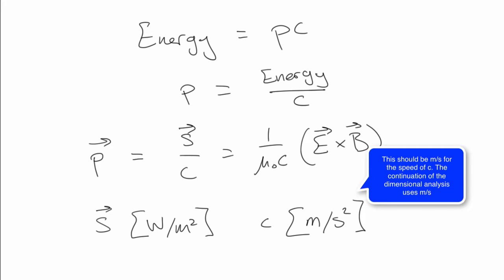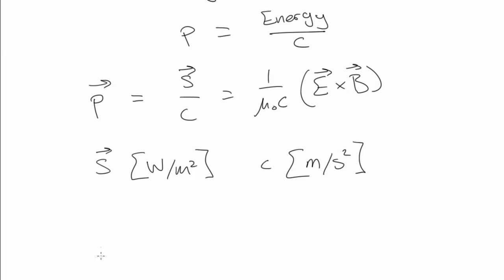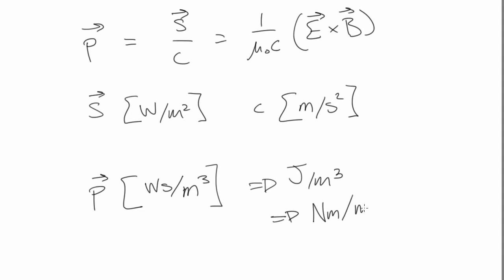So if we then do a quick dimensional analysis, we find out that the units of the momentum flux are watts seconds per meters cubed, which becomes joules per meters cubed, becoming newton meters per meters cubed, becoming newtons per meters squared.